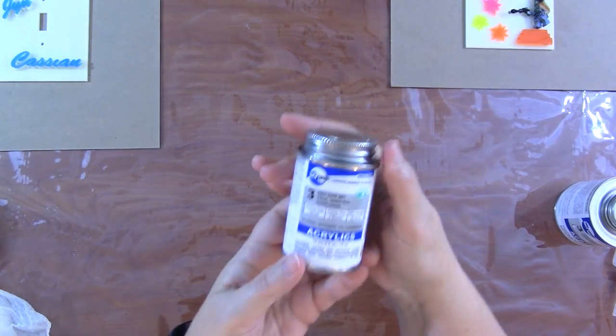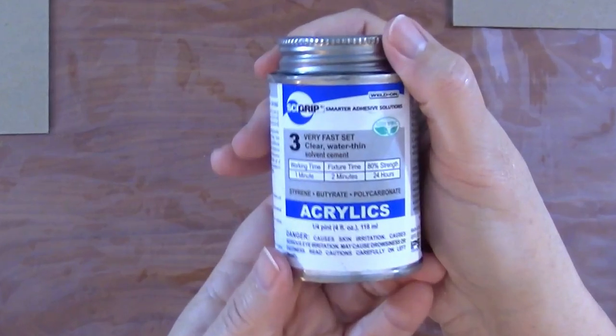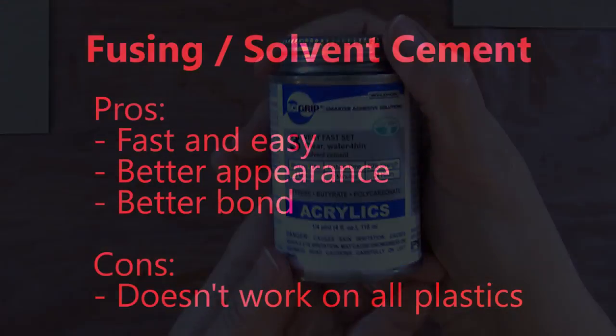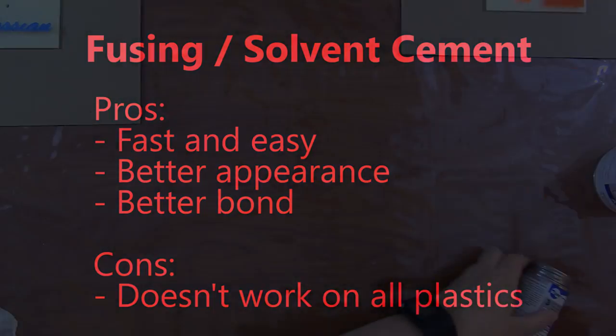I want to talk for a second about fusing, which I've shown in past videos where we use this solvent cement, and fusing has a lot of advantages. It's fast and easy. It gives you a better look especially on transparent and translucent acrylic. It gives you a better bond because it actually fuses or welds two pieces of acrylic into one piece.